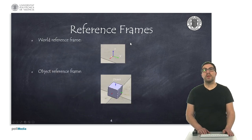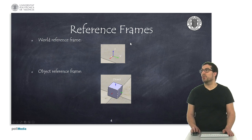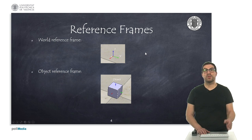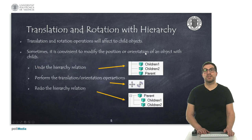The world reference frame can be found at the bottom right corner of the program and it has the appearance as shown here. The object has its own reference system and it will be displayed when we select it. The color code for the reference frames is red for the x-axis, green for the y-axis, and blue for the z-axis.